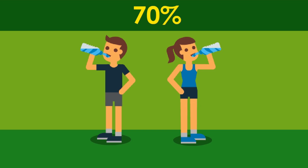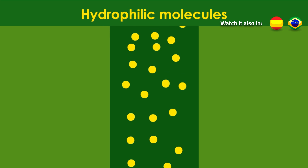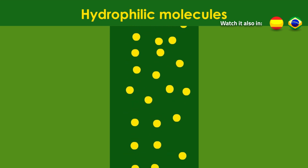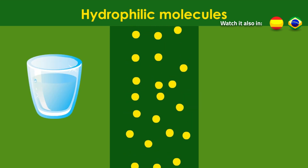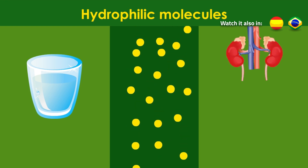I wonder if the molecules human beings need to discard are soluble in water. The proportion of water is great, so it can be used as a medium to discard the waste, right? Great! They are hydrophilic molecules. Therefore, they use a solvent such as water and are carried to be discarded.